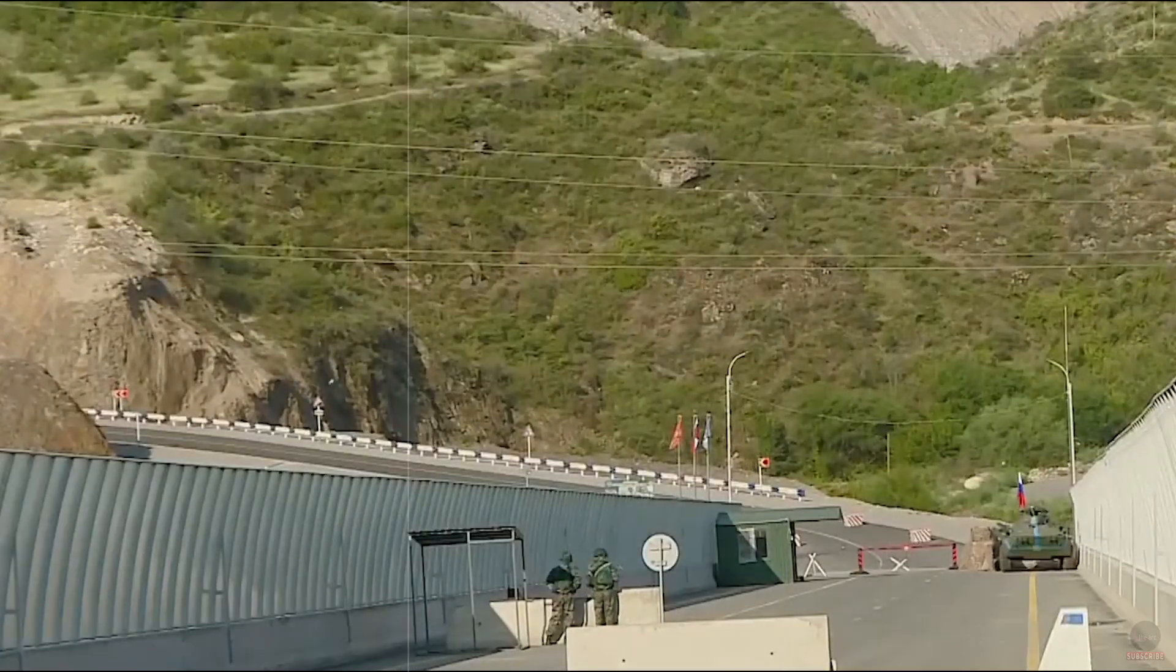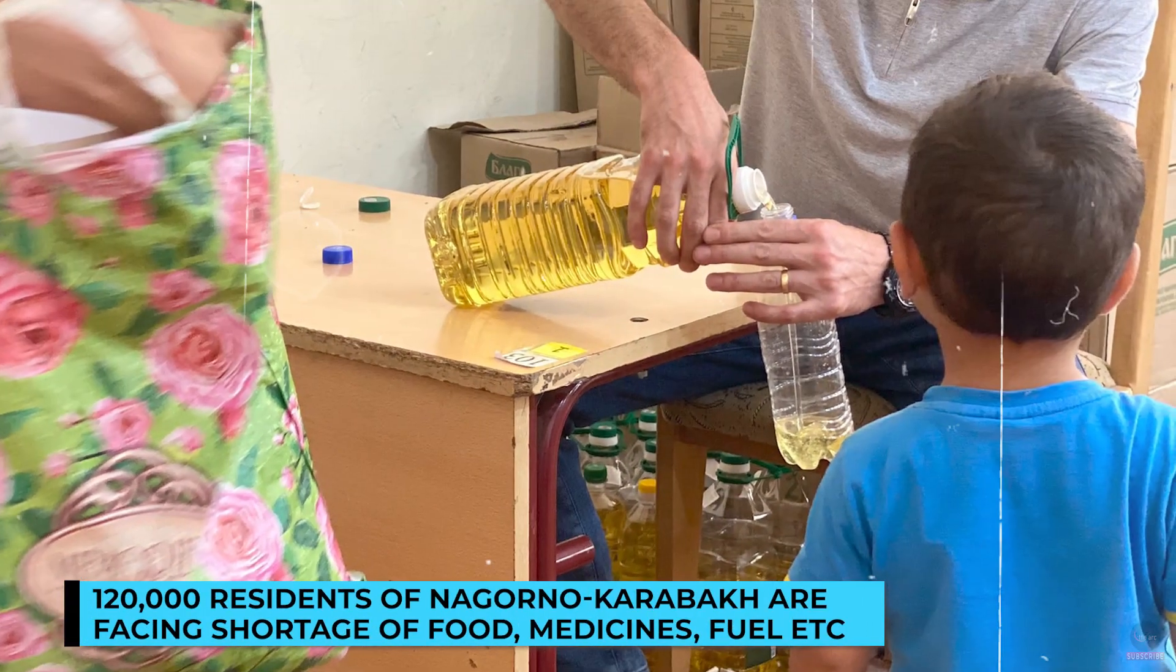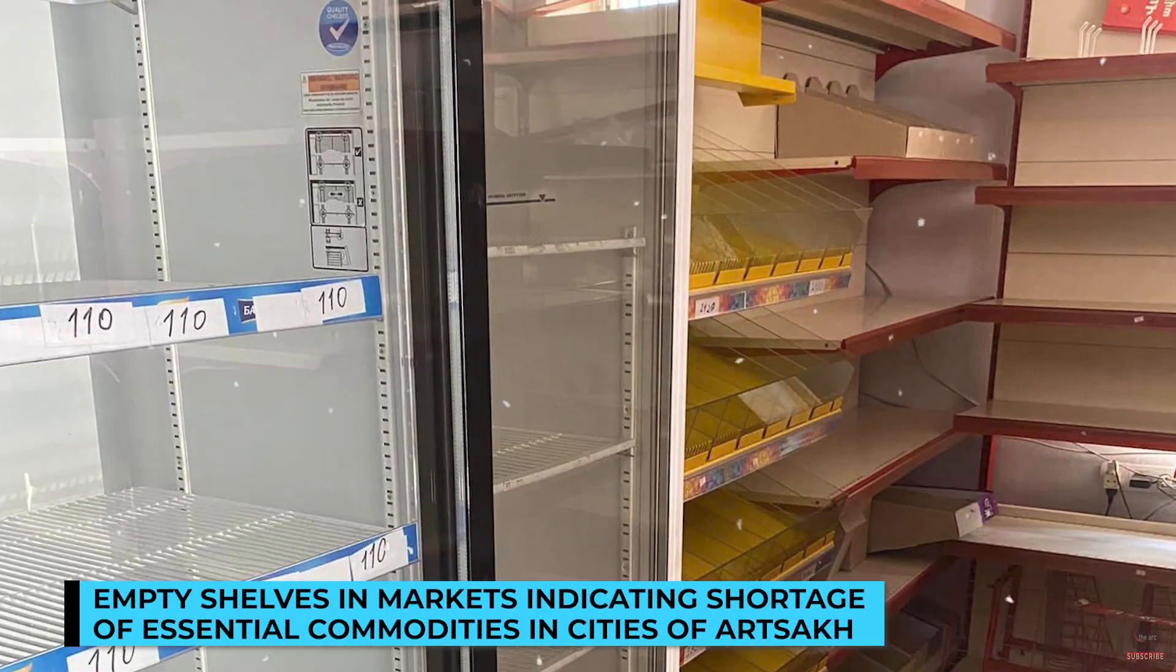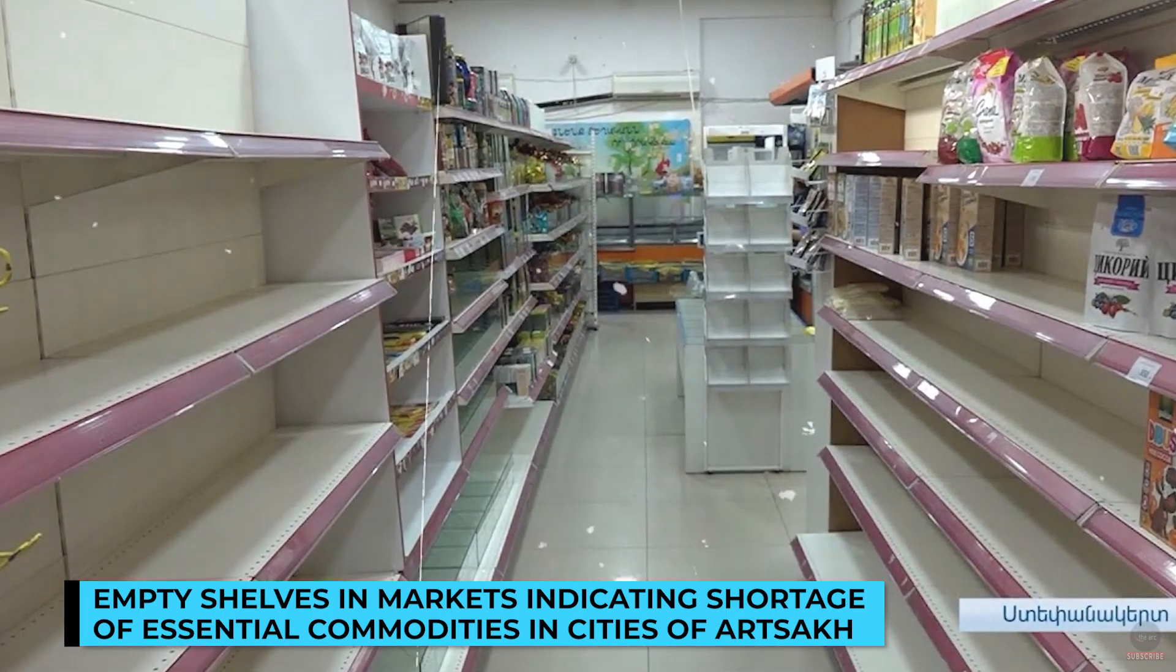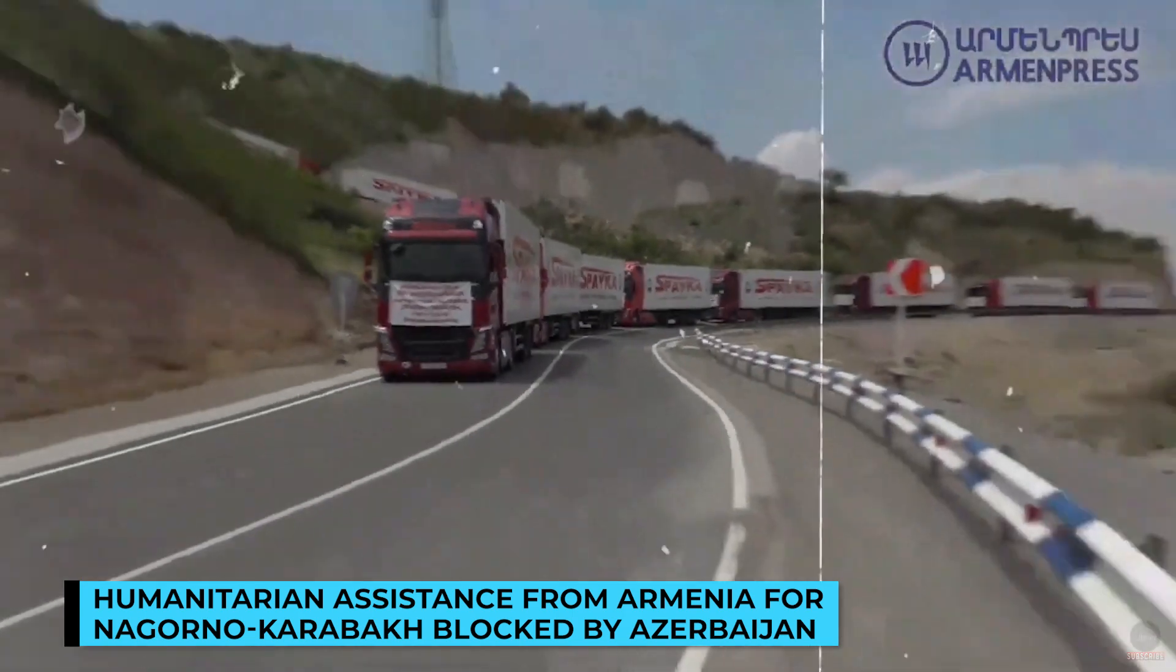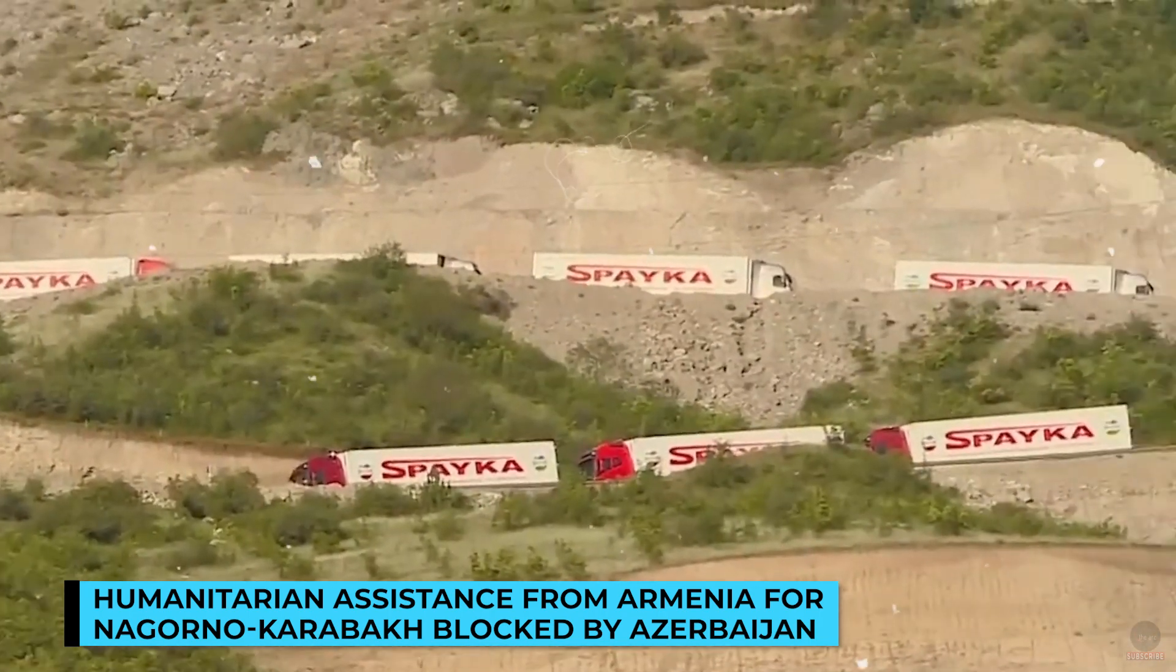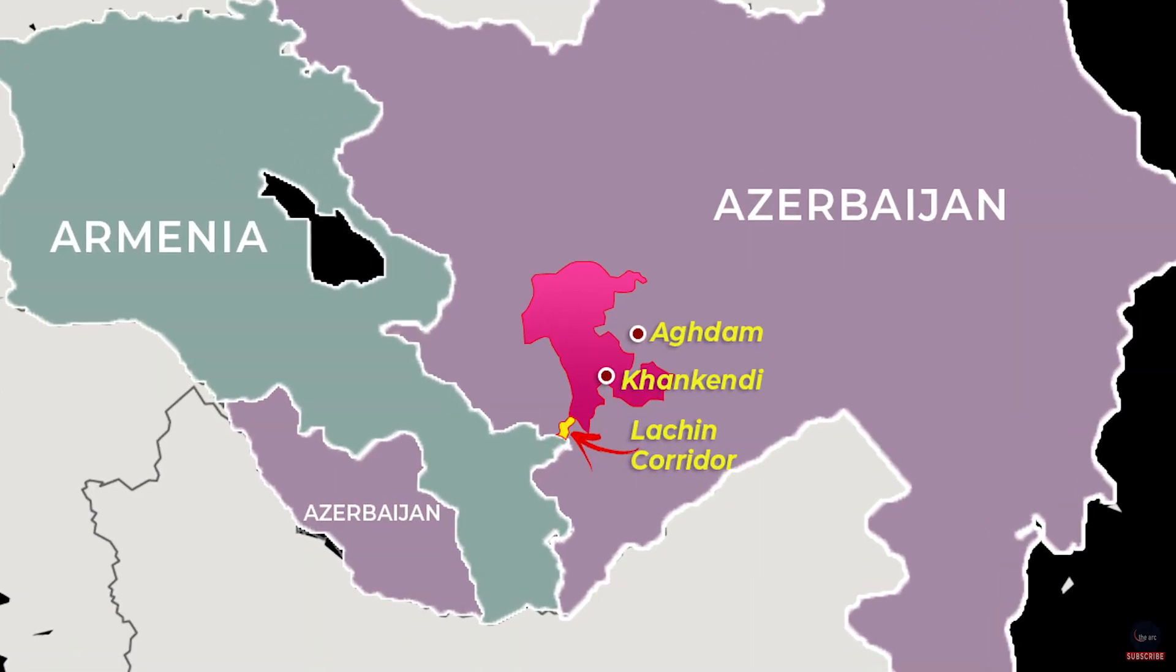The blockade has created a humanitarian crisis as the landlocked Nagorno-Karabakh region has access to Armenia only through this corridor. Around 120,000 Armenian residents of Nagorno-Karabakh are facing shortage of food, medicines, fuel and other essentials. The Azerbaijan side says the Lachin Corridor was being used to fuel separatism in Artsakh and that's why it would remain blocked. The blockade has been condemned by many countries, but there has not been any progress with respect to opening of the corridor as of yet.